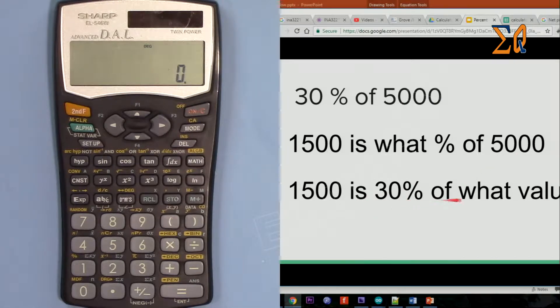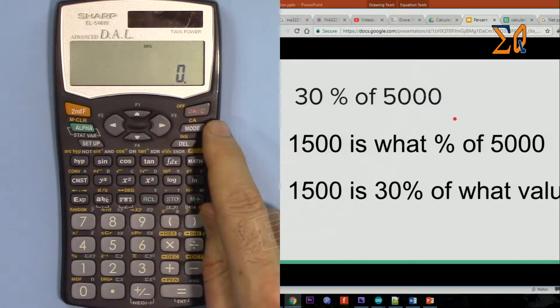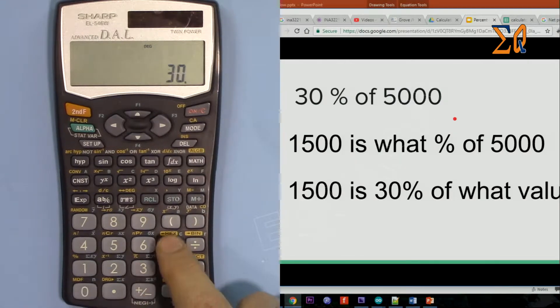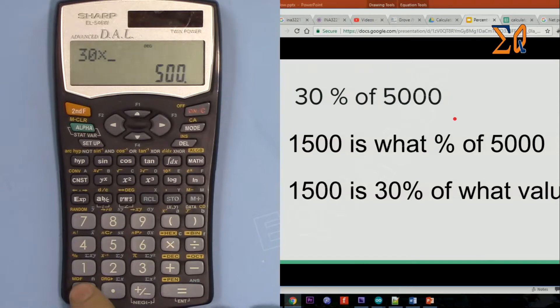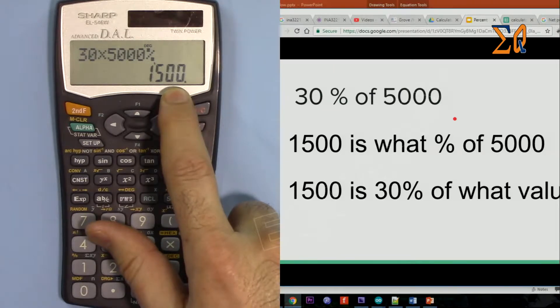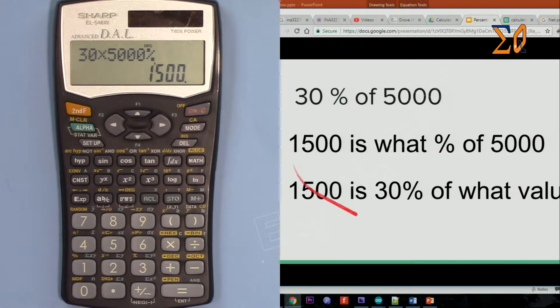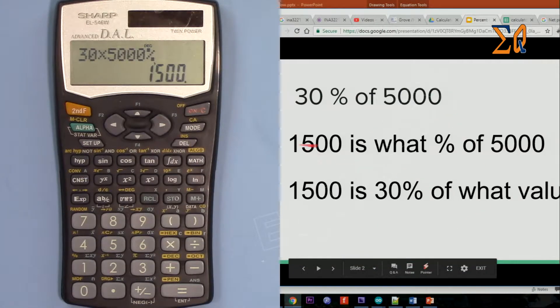Let's do the most basic one that the calculator can do automatically. So 30 times 5000, you just do that and then for the percent you press second function and then one. So that answer is 1500.